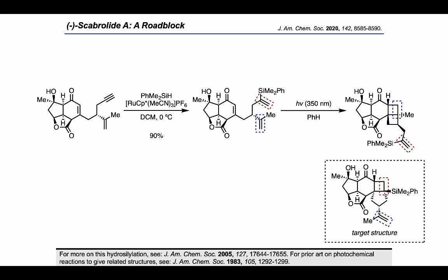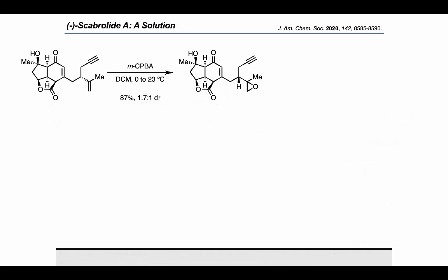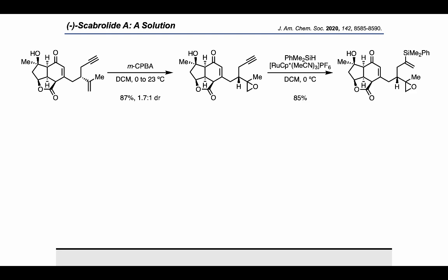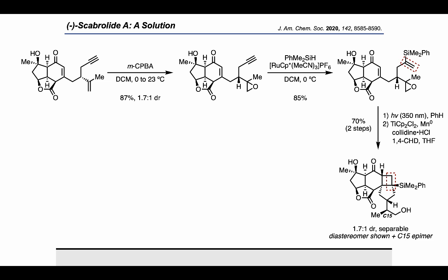To get around that selectivity issue, they decided to go back to an earlier intermediate and treat with MCPBA, which gave a mixture of diastereomers by epoxidation of the terminal alkene. Then, using the same sequence, they performed a ruthenium-catalyzed hydrosilylation followed by a 2+2 via irradiation with 350 nm light to get the desired cyclobutane product, with which they carried out another reductive epoxide opening with titanocene dichloride, manganese, and 1,4-cyclohexadiene. This provided a mixture of diastereomers at C15. It's worth noting that this 2+2 is proposed to proceed by the alkene approaching the enone from the convex face, resulting in a 1,7-cyclization to give a 1,4-diradical that closes to form the trans-fused 6,4-junction in the cyclobutane product.